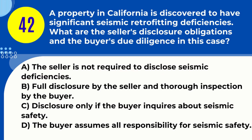Question 42. A property in California is discovered to have significant seismic retrofitting deficiencies. What are the seller's disclosure obligations and the buyer's due diligence in this case? A. The seller is not required to disclose seismic deficiencies. B. Full disclosure by the seller and thorough inspection by the buyer. C. Disclosure only if the buyer inquires about seismic safety. D. The buyer assumes all responsibility for seismic safety. Answer: B. Full disclosure by the seller and thorough inspection by the buyer. Explanation: California law requires sellers to disclose known material facts, including seismic retrofitting deficiencies. Buyers should conduct due diligence with a thorough inspection.